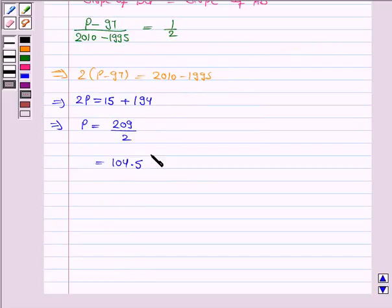So, the population in the year 2010 will be 104.5 crores. Hence, the slope of the line is 1 by 2 and the population in the year 2010 will be 104.5 crores.